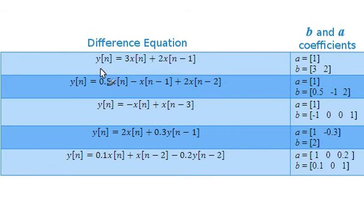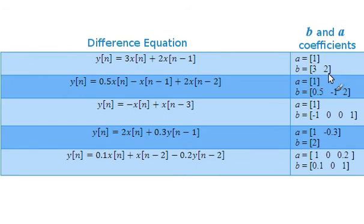In the first example, the difference equation is given by Y(N) = 3X(N) + 2X(N-1). The A vector has a single coefficient, and the B vector has two coefficients. The A coefficients are always associated with the Y terms in the difference equation, and the B coefficients are always associated with the X terms.